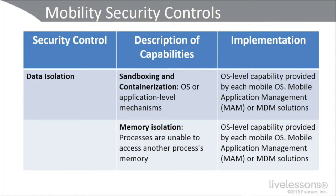The first control is data isolation — isolation of data through sandboxing and containerization. Sandboxing and containerization can be achieved at the operating system or the application level. We can also do memory isolation, where processes can't access other processes' memory. Each mobile device may have these capabilities in their mobile operating system, or we can use MAM or MDM solutions.